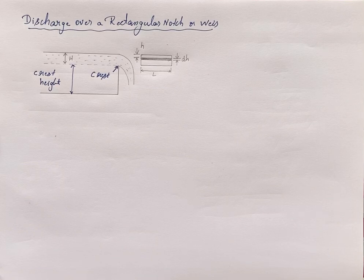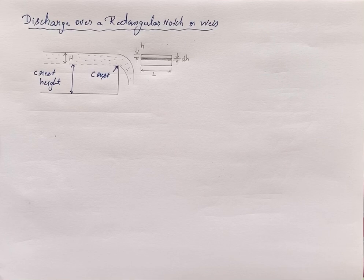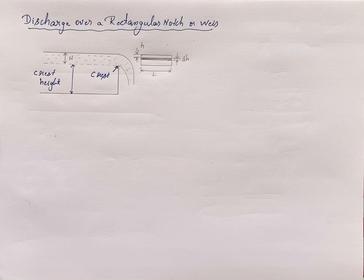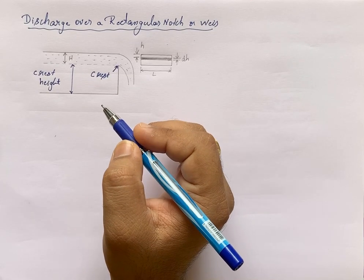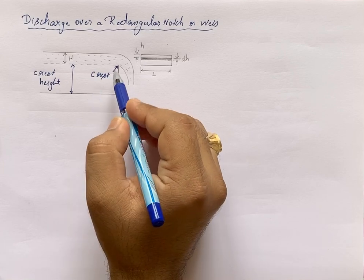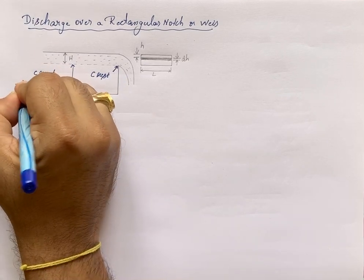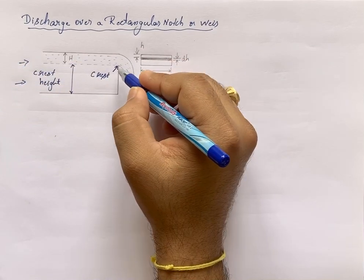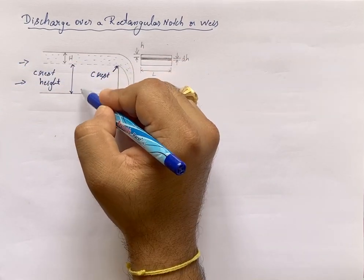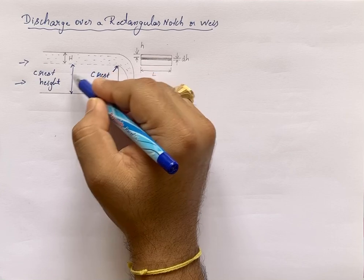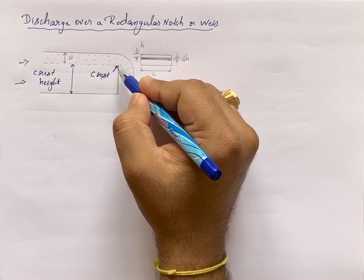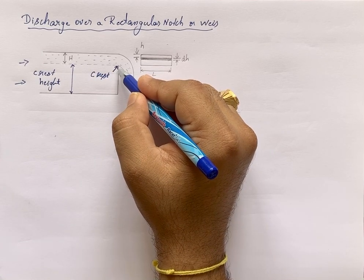A notch is a device used to measure the rate of flow of fluid through a small channel or tank. It has an opening where fluid flows from this side, and this height on which the fluid is collected is called the crest height, and this point is the crest.